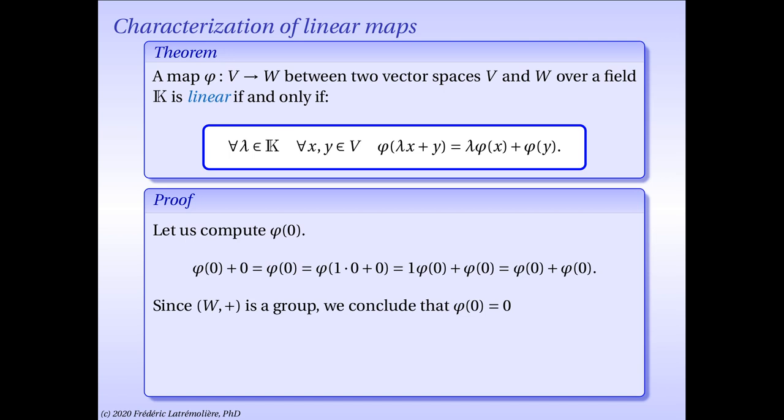In order to prove the second property about linearity, I need to first calculate phi of 0. Now, phi of 0 plus 0 is of course equal to phi of 0, since 0 is neutral for addition in W. I am going to rewrite 0 as 1 times 0 plus 0. Using the highlighted property, phi of 0 equals phi of 1 times 0 plus 0, which equals 1 times phi of 0 plus phi of 0. Again, 1 times phi of 0 is simply phi of 0. Since W as a vector space is in particular a group for addition, we can conclude that phi of 0 must indeed equal 0.